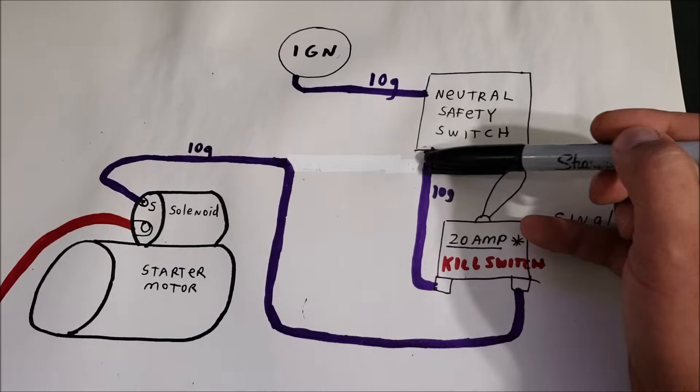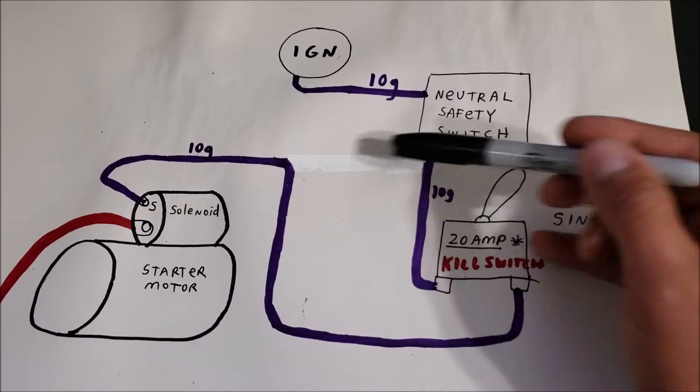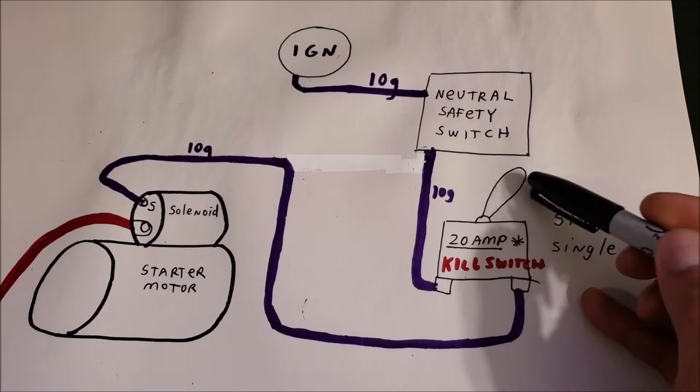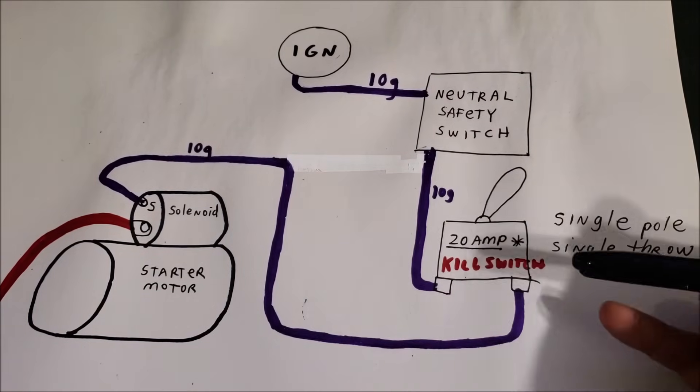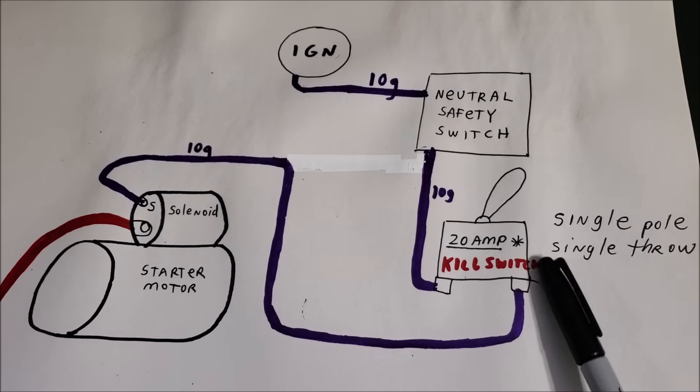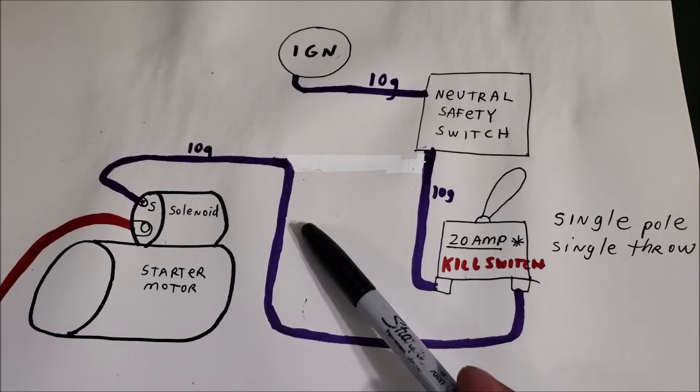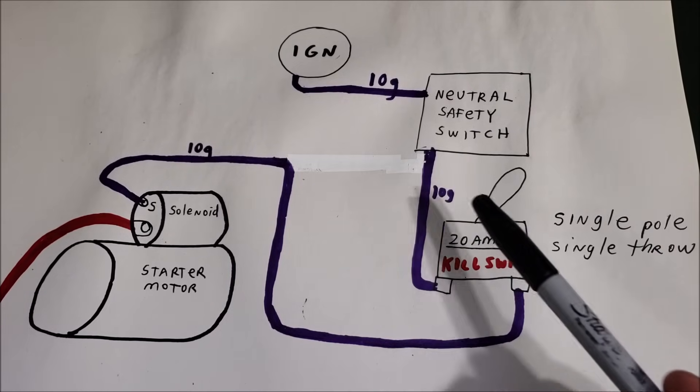All you do is you just reroute that wire that would go to the starter through an adequate switch, and now you have a manual override kill switch. You just find a nice place to hide that switch. Whenever it's on, the car starts up fine. Whenever you switch it to off, the car does nothing when they crank the key.